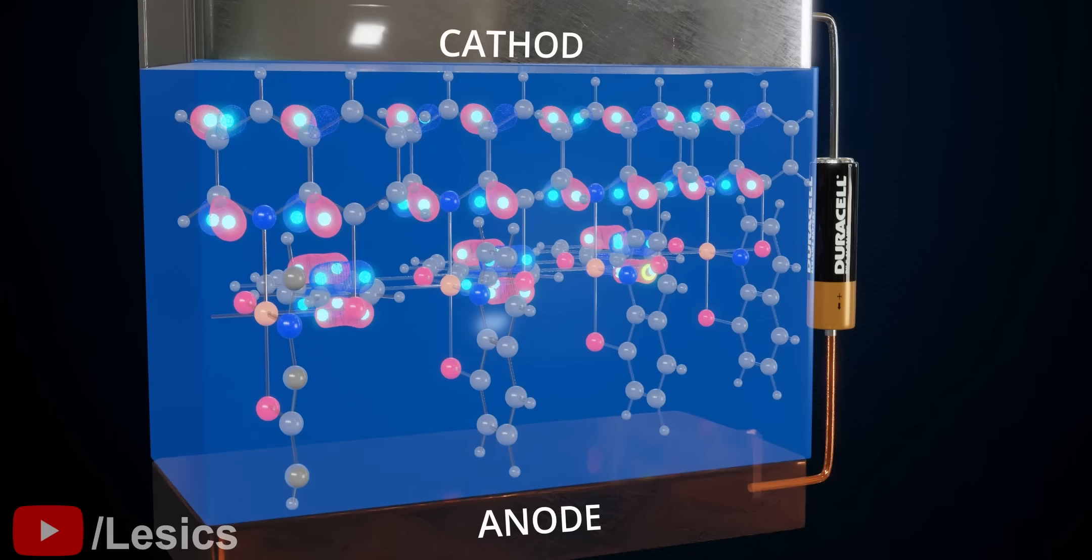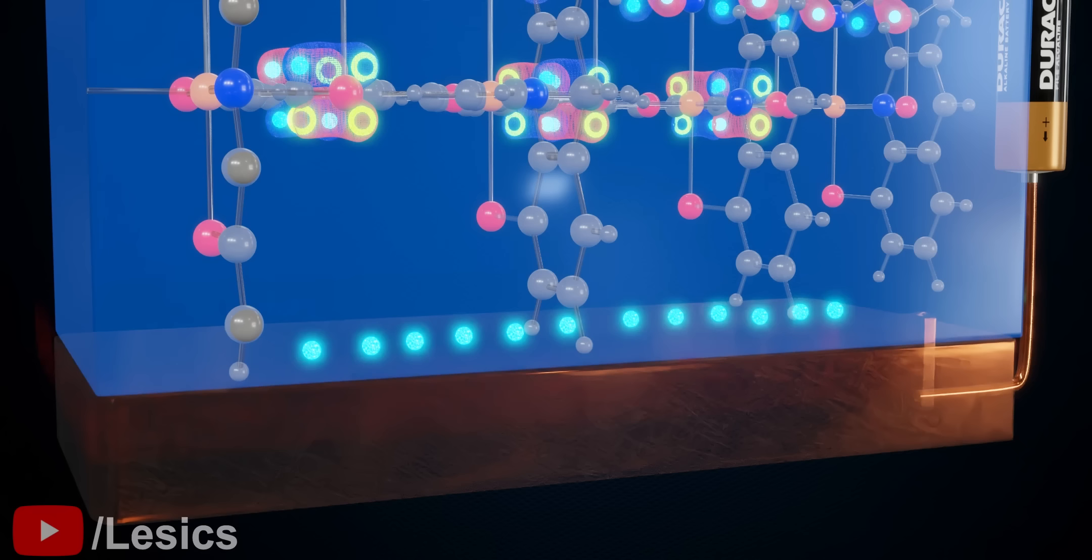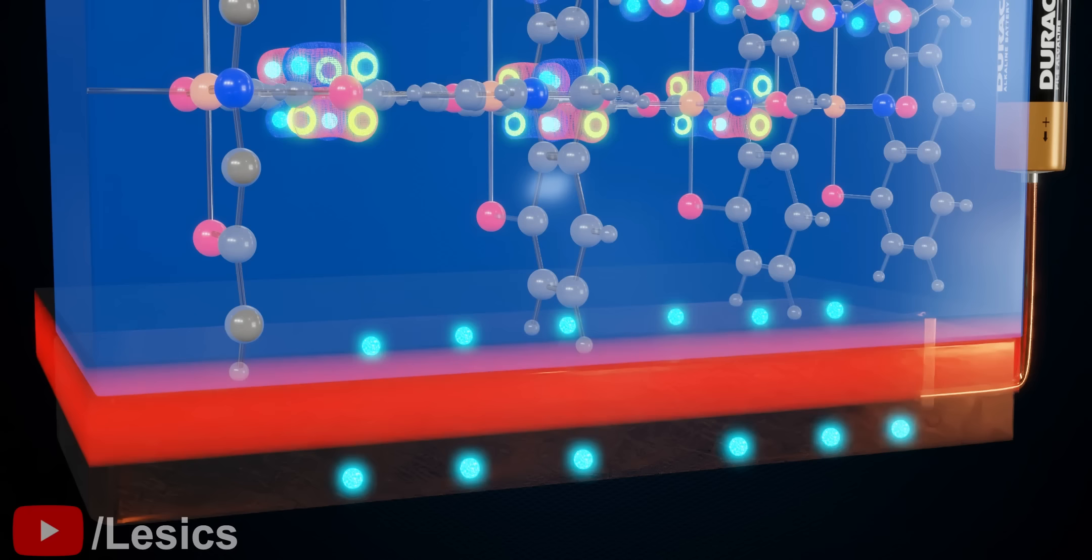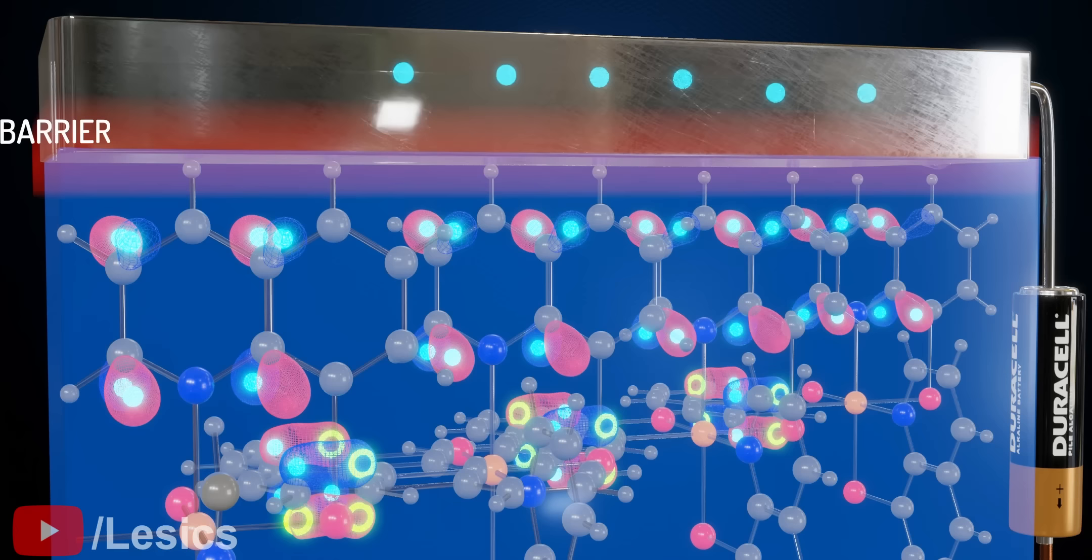However, this process is not simple. Let's look at the anode side first. When we connect the battery's positive terminal to the anode, it tries to extract electrons from the organic layer. However, there is an energy difference between the HOMO level of the organic layer and the anode, which will act as a barrier for electrons. The same is the case with the cathode side. So, the cathode won't be able to inject electrons easily and consumes more energy.